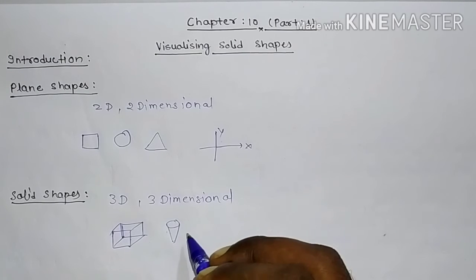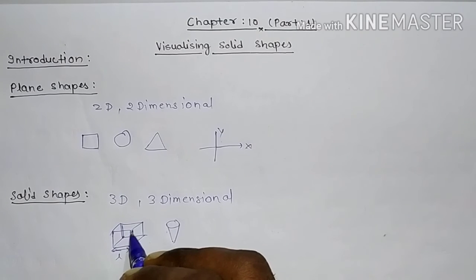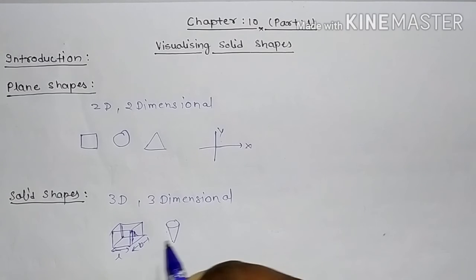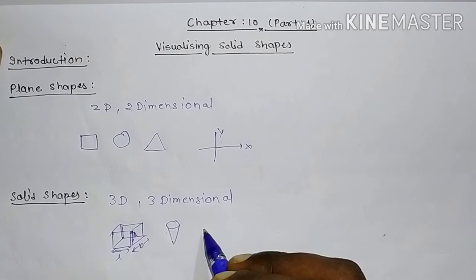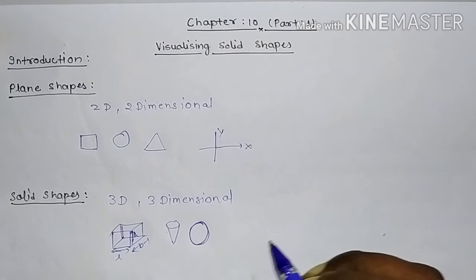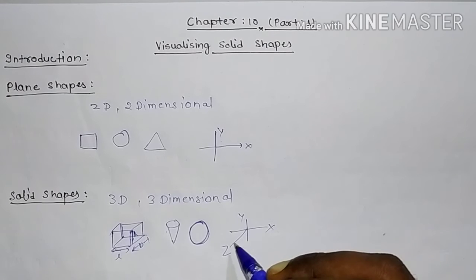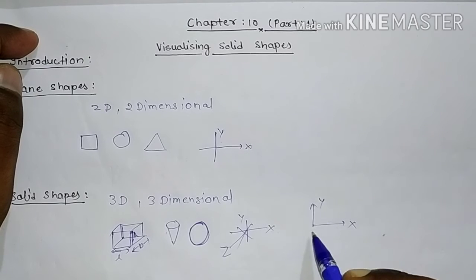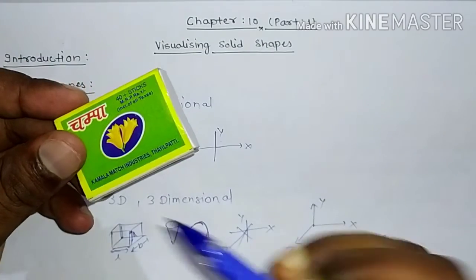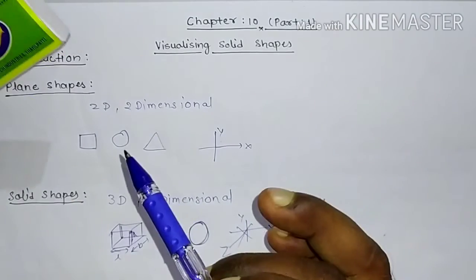These are three-dimensional shapes because they have length, breadth, and height. A cone is also a three-dimensional shape, and a sphere — like a football — is also three-dimensional; it is not a circle. It has three axes: x-axis, y-axis, and z-axis. For example, a matchbox has length, breadth, and height, making it a three-dimensional solid shape.